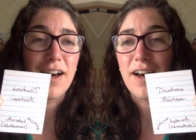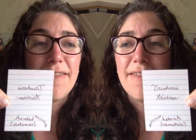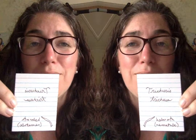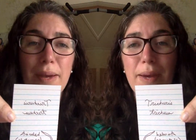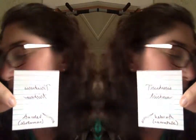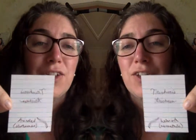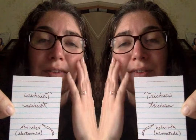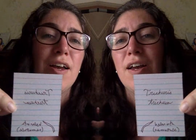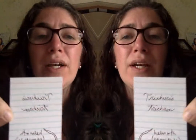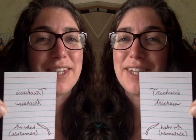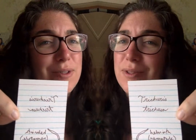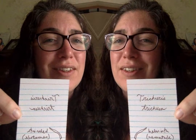Next is Trichuris, which is whipworm — also a helminth, a nematode. It has a tapered tail that's really thin and looks like a whip, which is why it's called a whipworm. You can get it from contaminated soil, from eating food grown in contaminated soil, or from drinking contaminated water, just like Ascaris. It also has that weird life cycle where it hatches in the intestine, then goes to the lung, then to the throat, and you swallow it back down into the intestine.